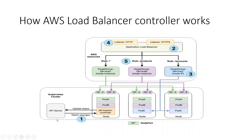In this diagram we have a Kubernetes cluster with the API server and a bunch of pods deployed on a series of nodes. Pod C represents the accounts application, Pod B the products application, and Pod A the generic application. The diagram shows a series of sequences numbered 1 through 5. In step 1, the controller continuously watches the API server for ingress events. When it finds ingress resources deployed through kubectl apply, it starts creating the AWS resources.